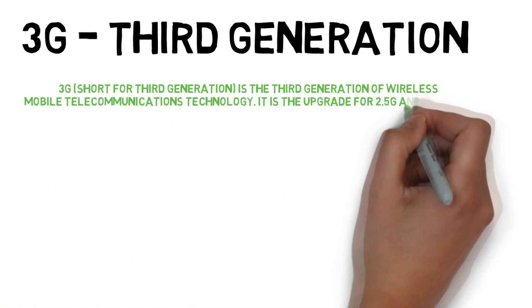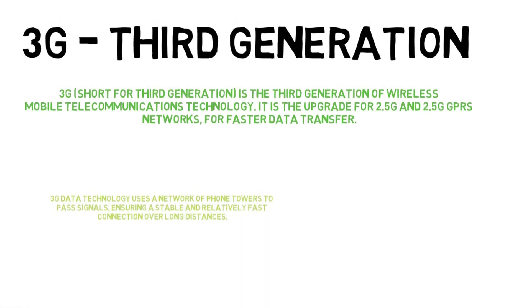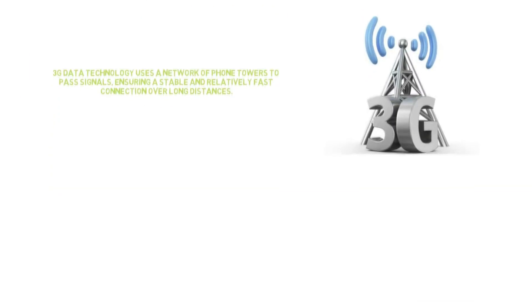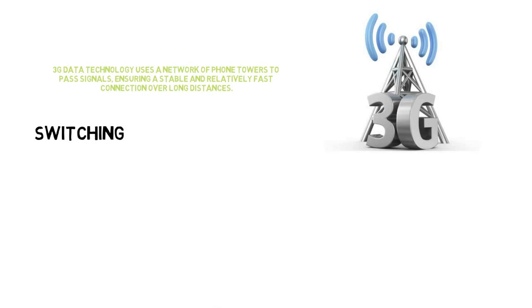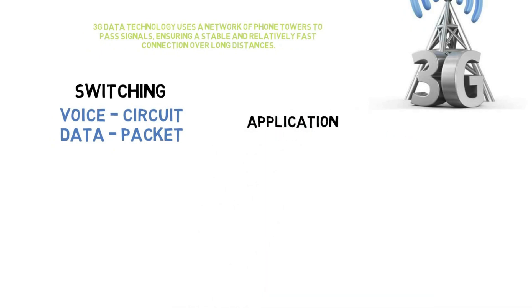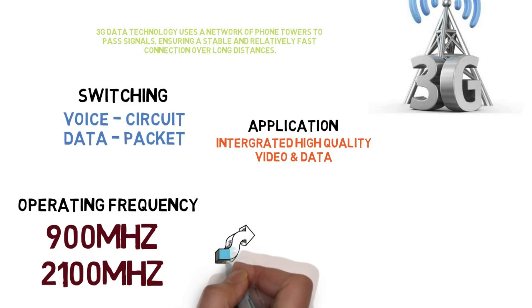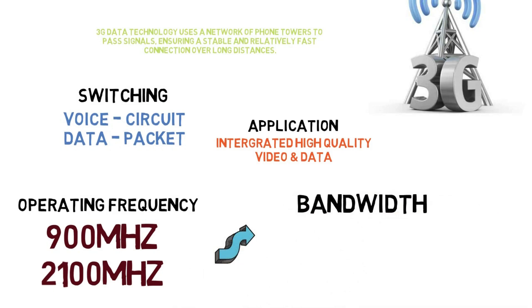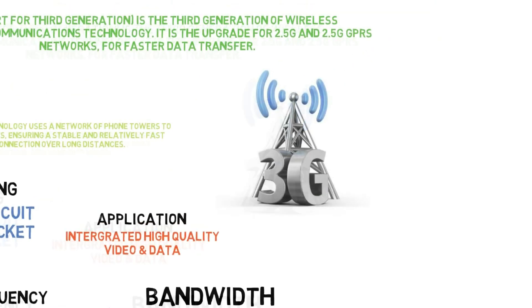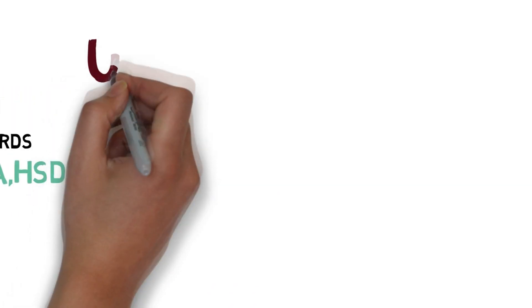3G, the third generation of wireless mobile communication technology, is upgraded from 2.5G and 2.75G. The switching technique used is circuit switching for voice and packet switching for data. Applications include integrated high-quality video and data. The operating frequency is 900 MHz and 2,100 MHz, with a bandwidth of 5 MHz. Standards used include UMTS and HSPA.